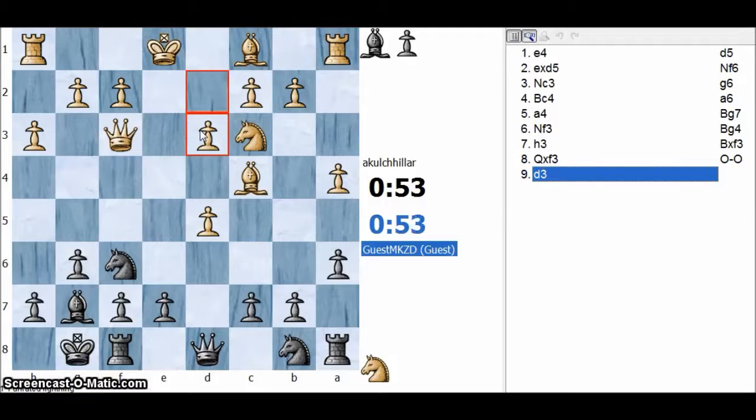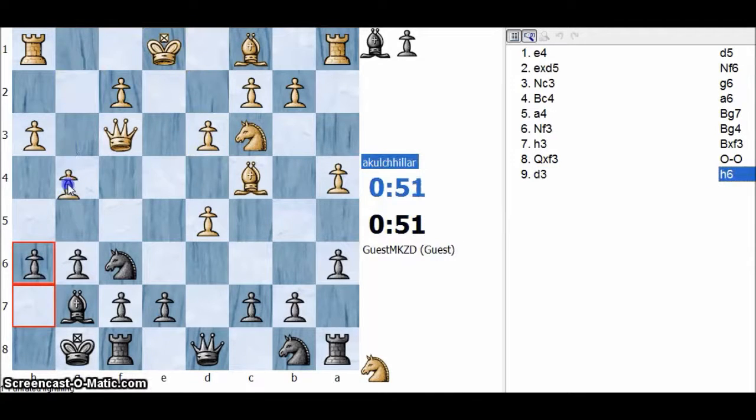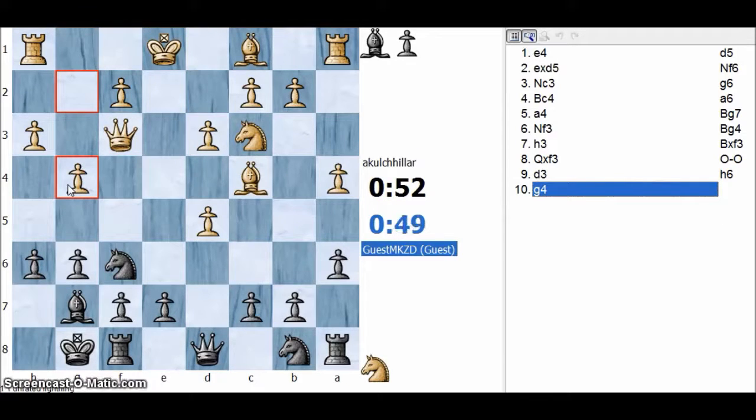Knight to f6, setting my e4 pawn. Let's protect it with a rook and let's now go for the center.